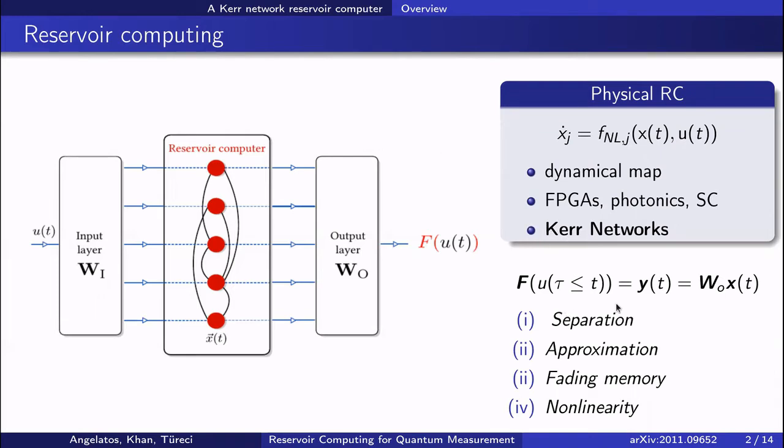Training this output layer, as depicted here, is a computationally inexpensive convex optimization. And importantly, the internal parameters and consequent dynamics of this reservoir are not optimized for any specific task. Despite this, reservoirs such as the Kerr network we consider here, which satisfy this simple set of properties, can be shown to produce arbitrary functions of an input, provided they have a sufficient number of degrees of freedom.